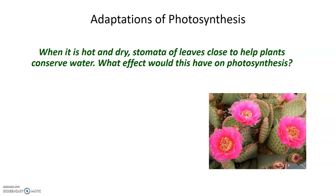When it's hot or dry in different climates, sometimes the stomata of leaves will close to help plants conserve water. In a normal location, those stomata can remain open and carbon dioxide gas can come in easily, and photosynthesis can happen. But in hot and dry climates, those stomata close because the plants don't want their precious water leaking out. Think about what effect this might have on photosynthesis.